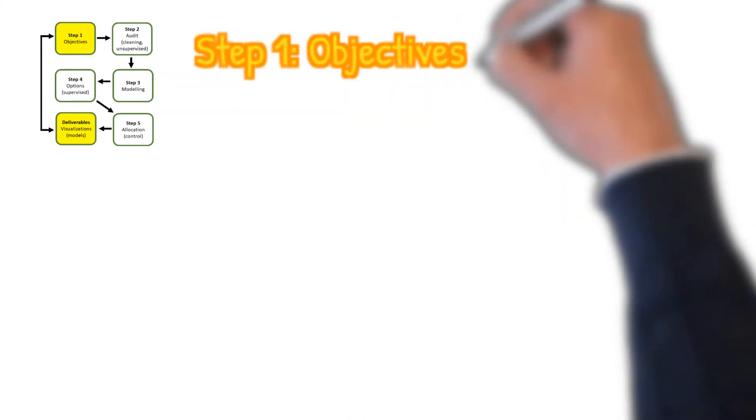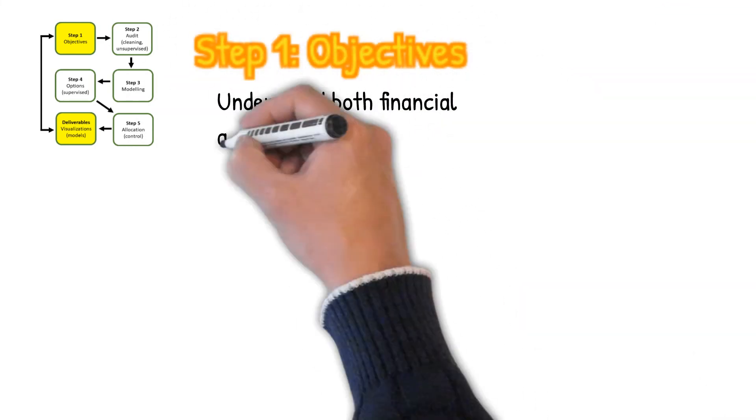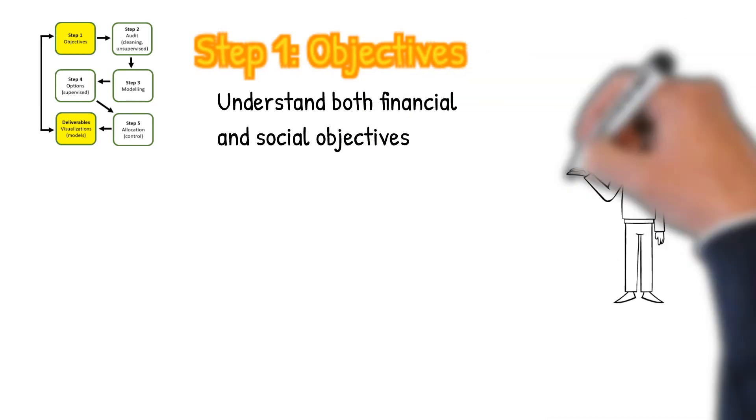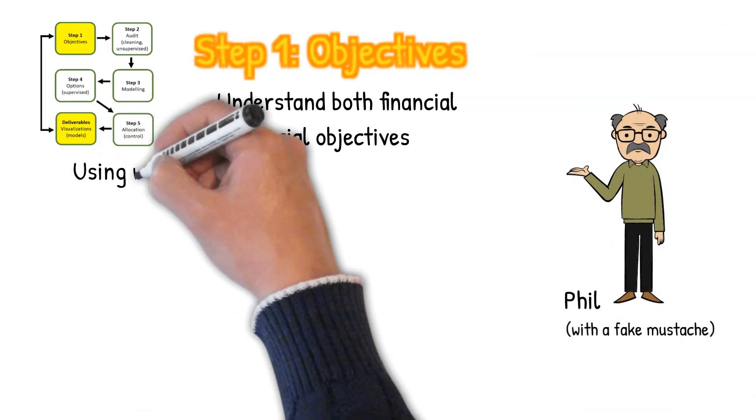There's a five-step process to developing a strategy in artificial intelligence. The first step is simply knowing what you want to achieve. What are your financial and social objectives?